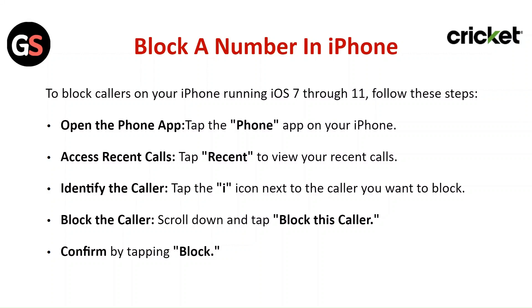Open the phone app. Tap on the phone app on your iPhone. Access the recent calls. Tap on the recents to view your recent calls. Identify the caller. Tap on the eye icon next to the caller you want to block.